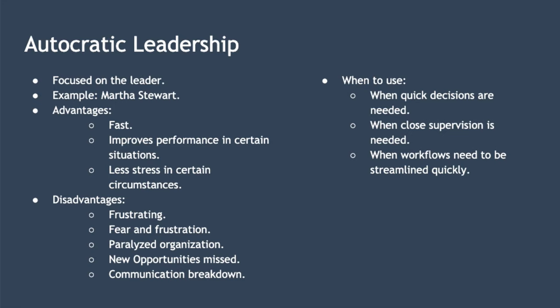There are also disadvantages to autocratic leadership. It can be frustrating for subordinates as communication is one way. Fear, resentment, and frustration are common as people don't like being bossed about and criticised more often than praised. It can result in a paralysed organisation when the leader isn't present, as the entire organisation depends on the leader for instructions. New opportunities can be missed unless the leader keeps pace with trends. The lack of flexibility doesn't lend itself to long-term planning, and communication breakdown can arise due to the lack of feedback allowed from subordinates.